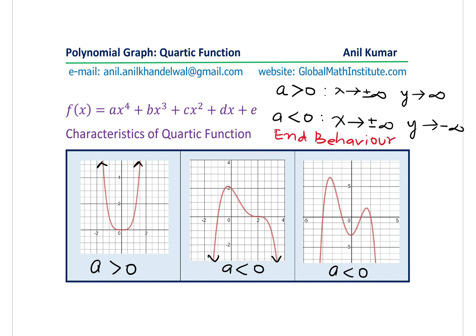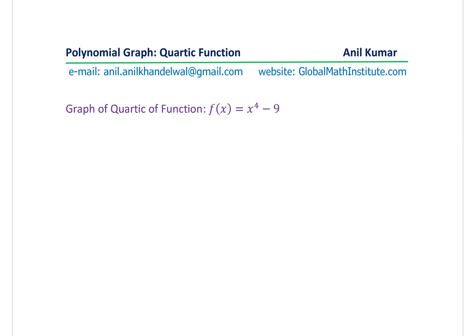Critical points we consider while sketching the graph will be the x-intercepts, the y-intercepts, and the multiplicity of zeros. With the knowledge of end behavior and the roots, we can sketch a rough graph of the quartic function. Let's take a few examples, beginning with a simple graph.